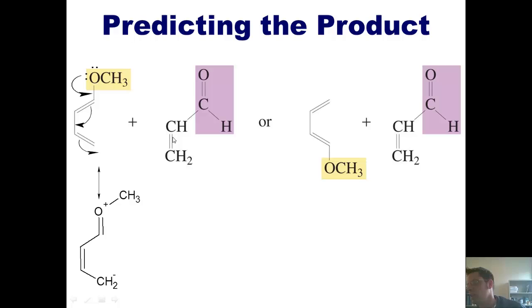I can draw a resonance structure of this molecule, in which I imagine these electrons swinging up like this, just like a door on a hinge, to form a carbon-carbon double bond here, while simultaneously pushing these pi electrons up onto this oxygen, giving it a negative charge, as shown here.